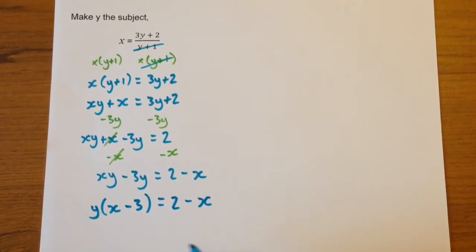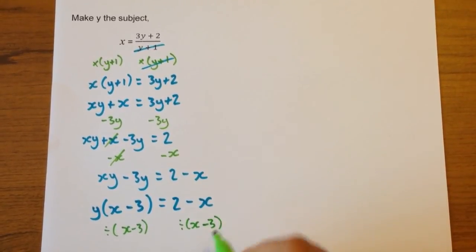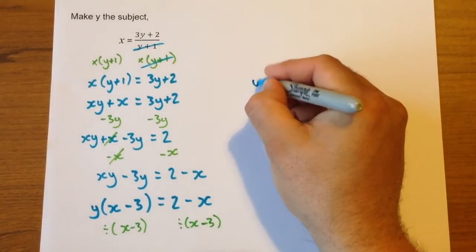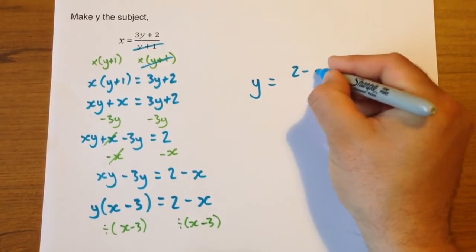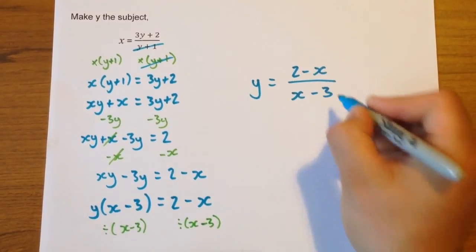Now the only thing we need to do is get rid of this x minus 3. At the moment that's multiplying the y, so the opposite is to divide both sides by x - 3. That gives us an answer that looks like y = (2 - x)/(x - 3).